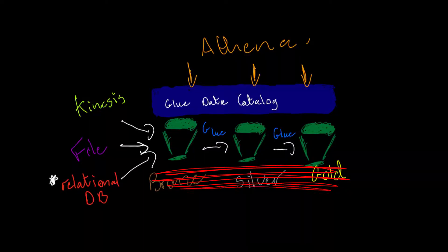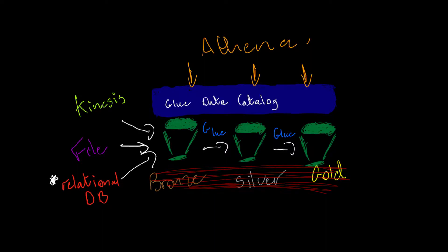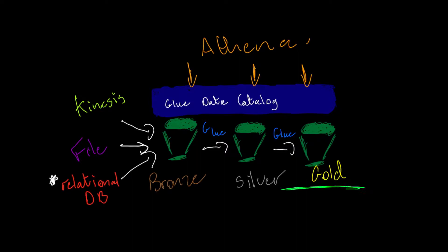Now, as you can see on the diagram, I've got three S3 buckets. You can use three S3 buckets to separate your bronze, silver, and gold layers depending on your security requirements. But to keep the costs down and for the purpose of this lesson, I'm going to use one bucket, but separated into three zones: gold, silver, and bronze.